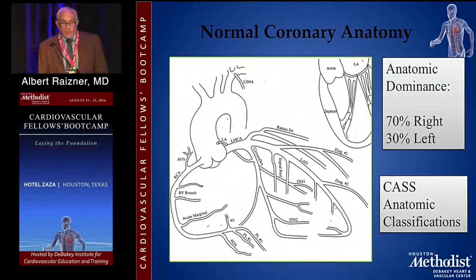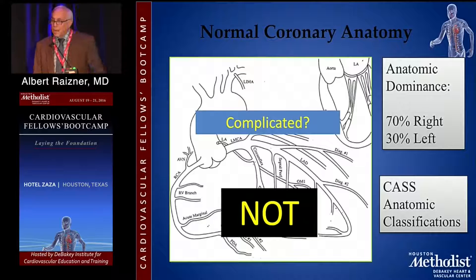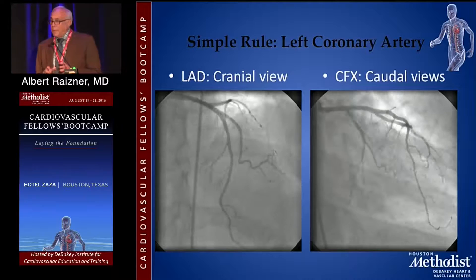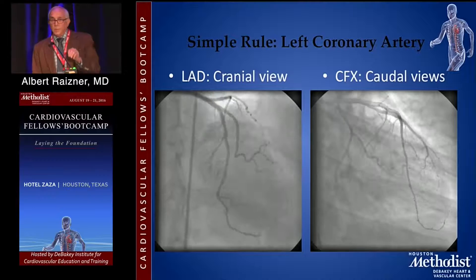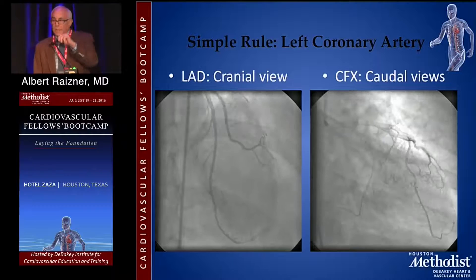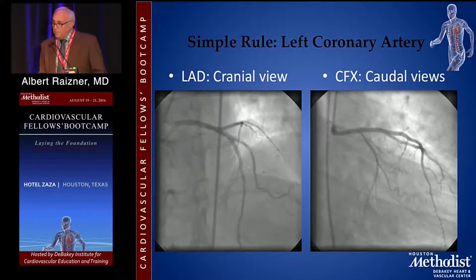If you look at coronary anatomy, the CAS trial made an important contribution in defining branches and segments to be analyzed, and this has gone into many anatomical definitions. It looks rather complicated, but the fact is that it really is not. Coronary angiography is much simpler than coronary artery anatomy itself. You can boil it down to a couple of important rules. For the left coronary artery, if you want to look at the left anterior descending system, the cranial views tell it all — AP cranial, RAO cranial, LAO cranial. Between those three views, you'll see all you need of the left anterior descending.